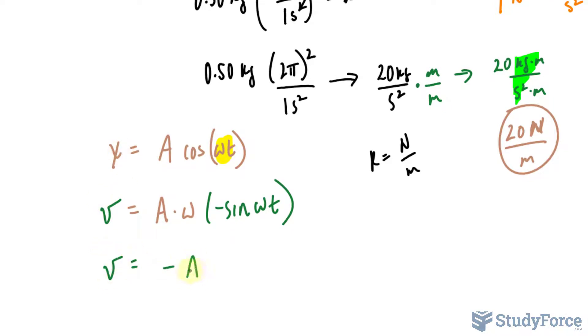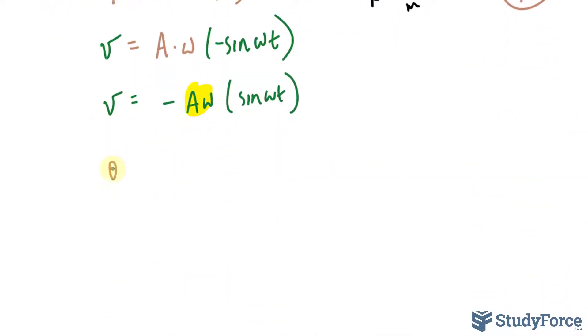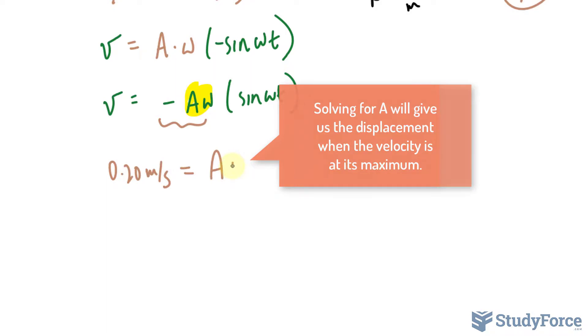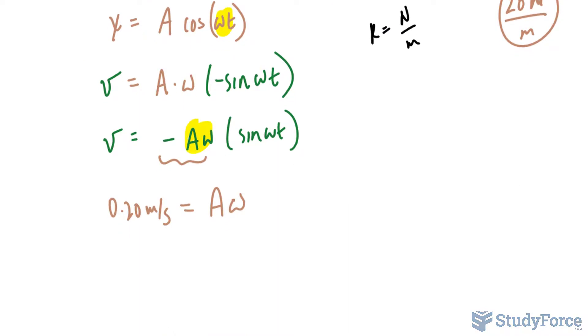So velocity equals negative A omega sine omega t. Now we're only interested in the amplitude because that will tell us the maximum value. The velocity was given as 0.20 meters per second, and we're only interested in the magnitude, being the amplitude of the function. The magnitude is A for amplitude, omega, which we found. So I'll write 0.20 meters per second equals A and 2π over 1 second for omega.